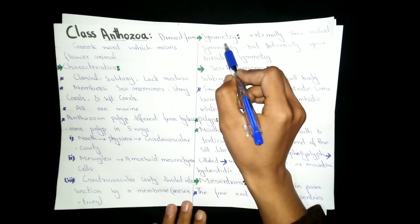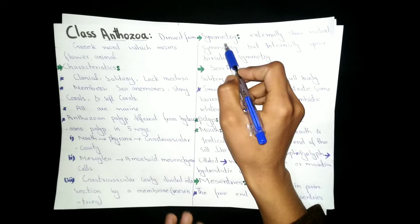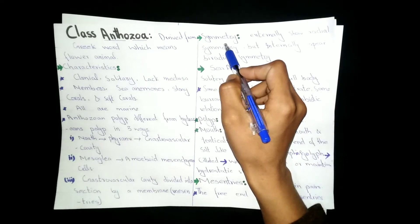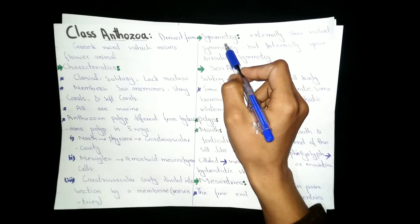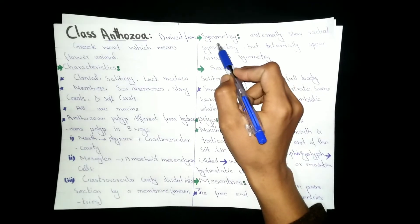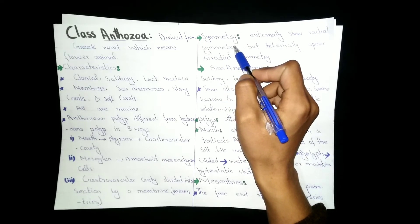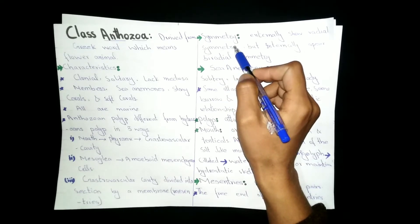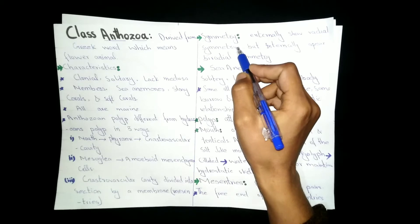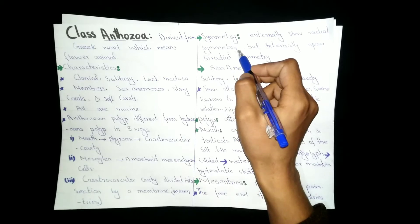Next is symmetry. The symmetry is shown in two types. If we look externally at the animals, the symmetry is radial symmetry. But internally, the mesenteries and other body parts show biradial symmetry.